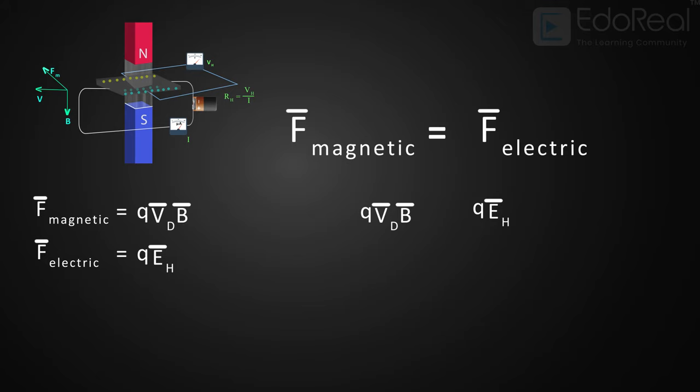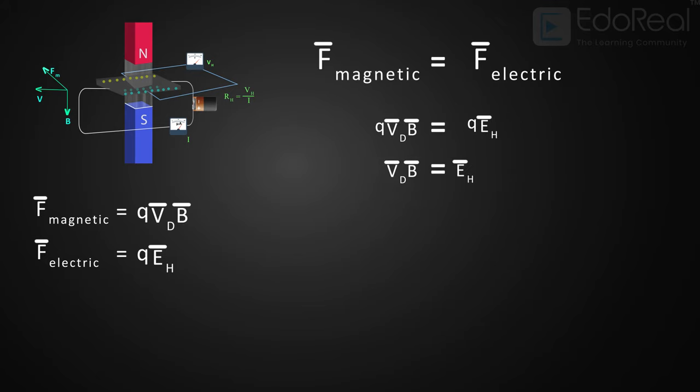By equating both, we get this equation. And we know that V is equal to Ed, where d is the width of the conductor. By substituting Eh value in this equation, we will get Hall voltage Vh as follows.